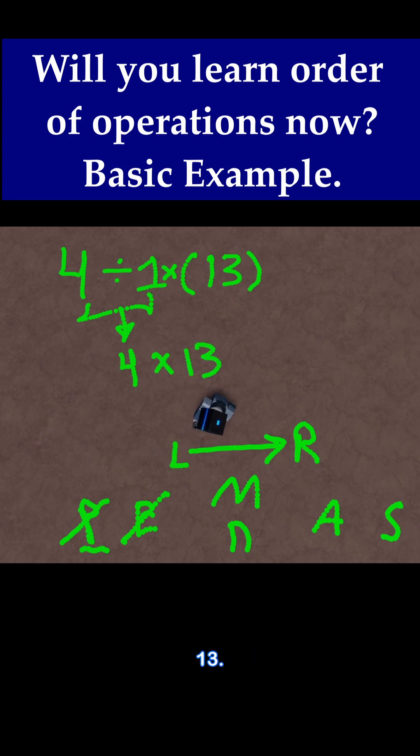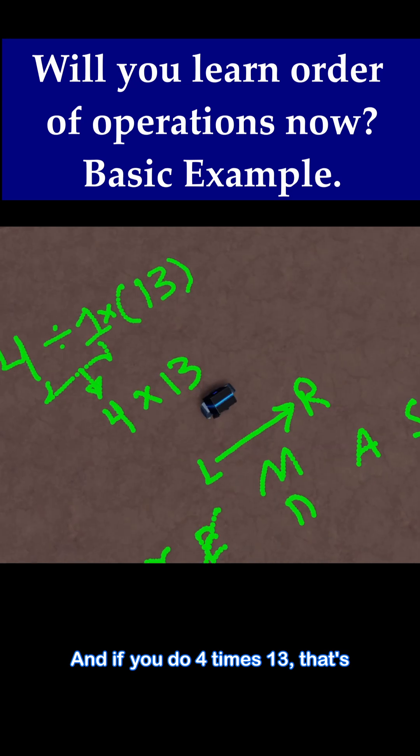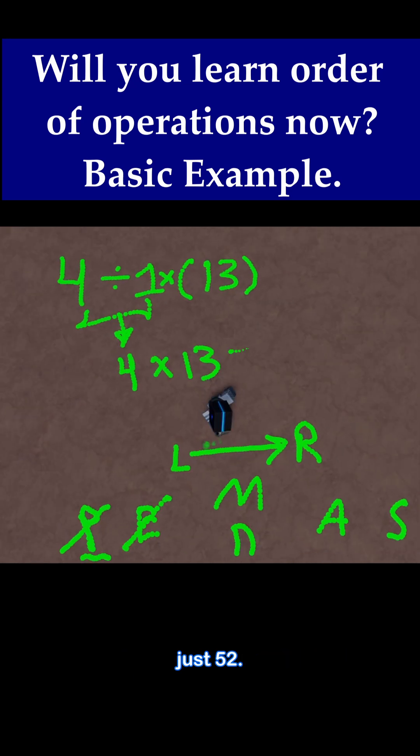And then now we just do 4 times 13. And if you do 4 times 13, that's just 52.